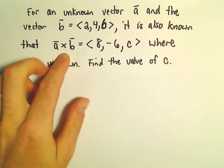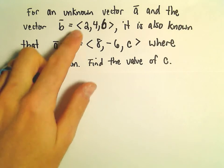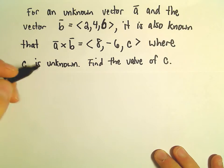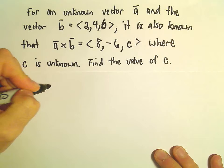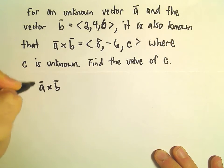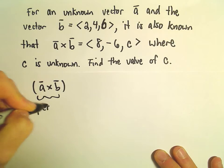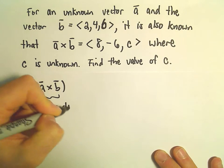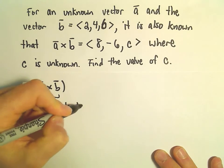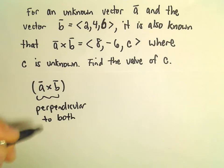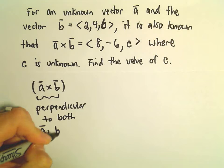Well, we can't compute the cross product directly because we don't really have any information about vector A. But what we can do is make a couple observations. Recall when we take the cross product, the cross product is going to be a vector that's perpendicular to the original vectors, perpendicular to both vector A and vector B.